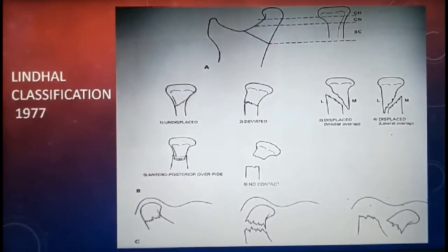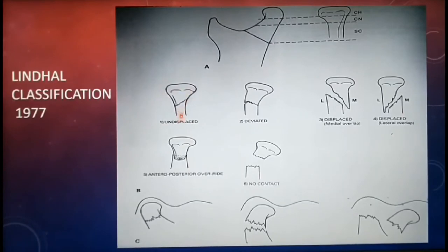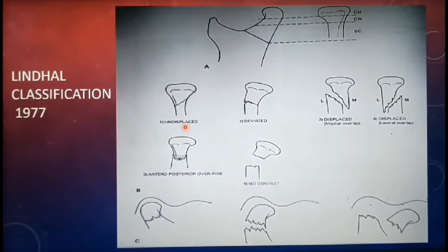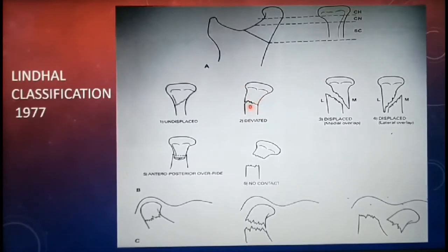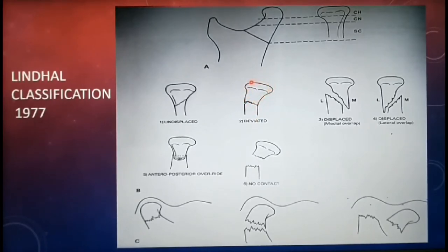Based on the relationship of the condylar segment to the mandibular fragment, fractures are classified as: undisplaced or non-displaced, where even if there is a fracture the condylar head does not displace; deviated, involving only an angulation of the condylar fragment in relation to the mandibular segment with fractured ends remaining in contact and no separation or overlap; and displaced with medial or lateral overlap, where the fractured ends of the condylar segment lie either medially or laterally to the mandibular segment — medially displaced condylar fragment is more commonly seen.